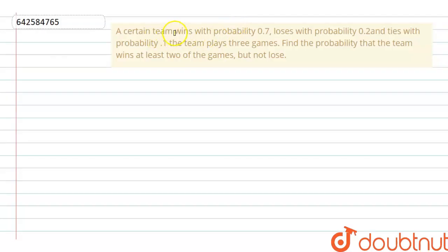Question is, a certain team wins with probability of 0.7, losses with the probability of 0.2 and ties with the probability of 0.1. The team plays 3 games. Find the probability that the team wins at least 2 of the games but not lose.